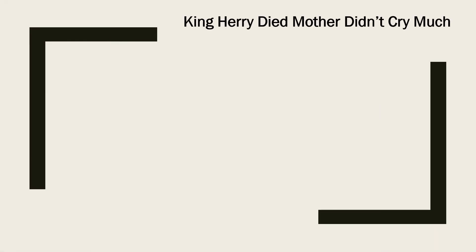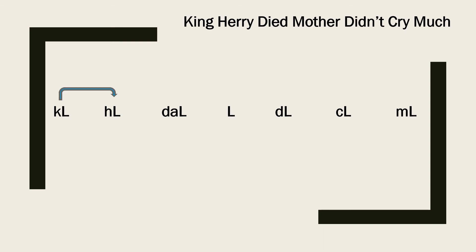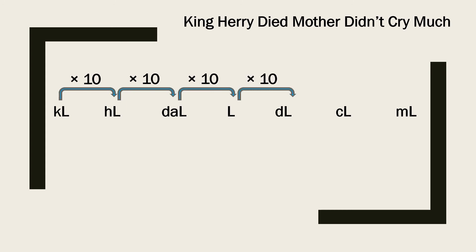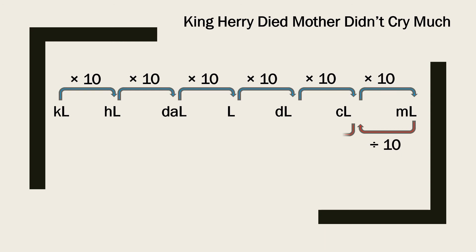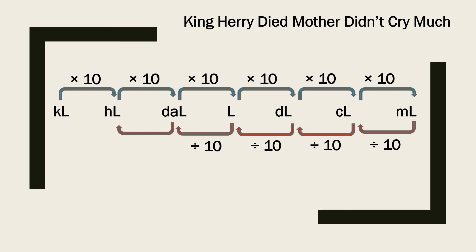You use the same sentence for capacity: K stands for kiloliter, H stands for hectoliter, D stands for decaliter, M means the basic unit — liter, then D for deciliter, C for centiliter, M for milliliter. To convert higher to lower, multiply by 10 at each step: kiloliter to hectoliter, hectoliter to decaliter, decaliter to liter, liter to deciliter, deciliter to centiliter, centiliter to milliliter. To convert lower to higher, divide by 10 at each step going back up.